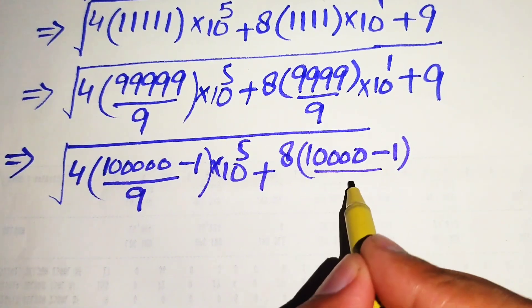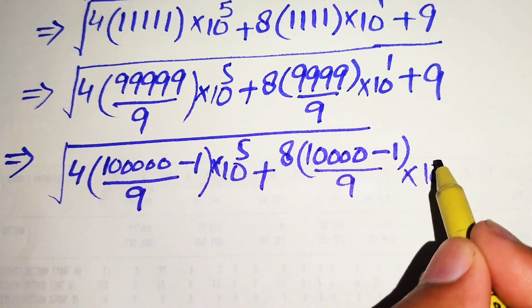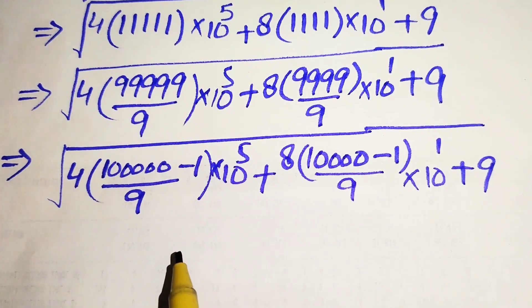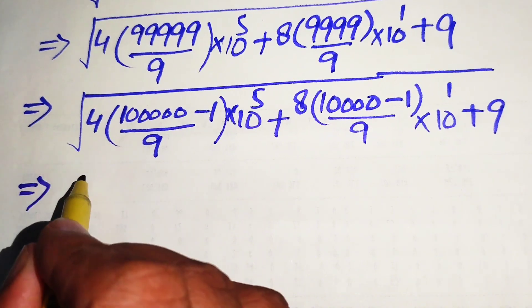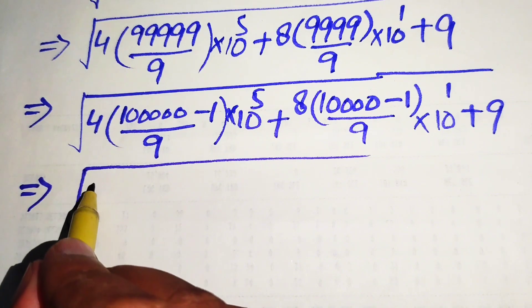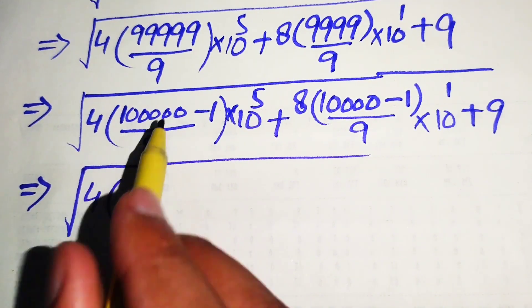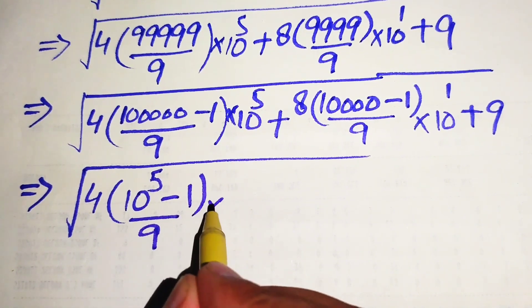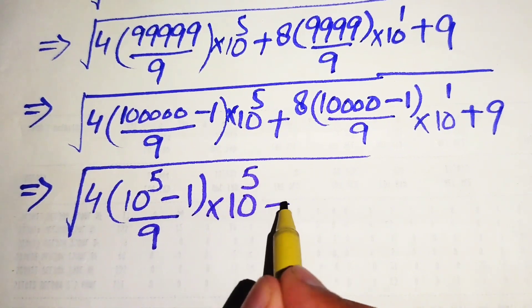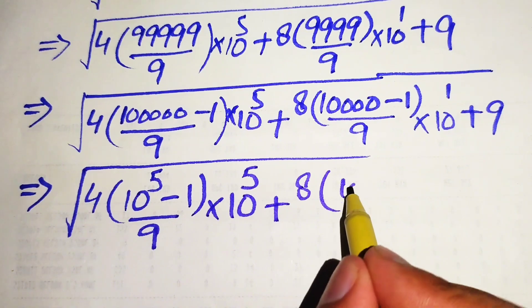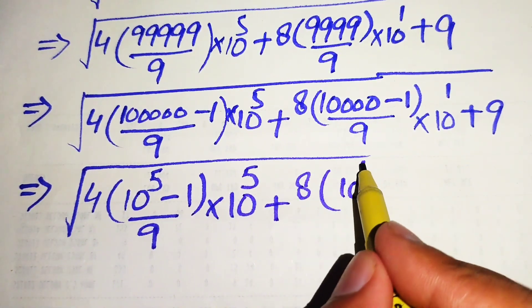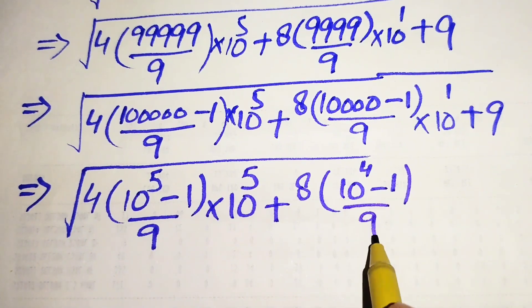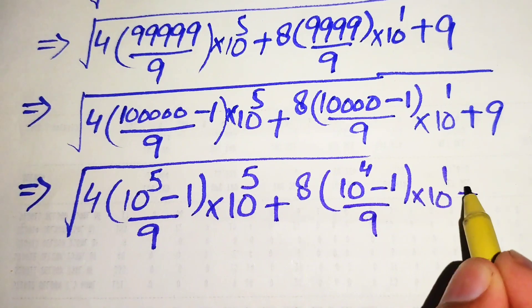After this step, we write the expression as 4 times of 9 multiplied by 10 raised to power 5, minus 1, divided by 9, multiplied by 10 raised to power 5. Plus we have 8, written as 10 raised to power 4, minus 1, divided by 9, multiplied by 10 raised to power 1, plus 9, and its whole square root.